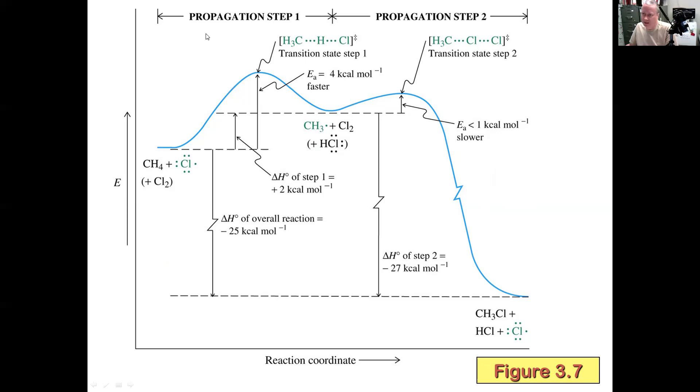But with propagation, it is a cyclic process. Propagation step one will lead to propagation step two. Then propagation step two creates a chlorine radical again, and that continues the process, right? So it's going to go propagation step one, two, one, two, et cetera.